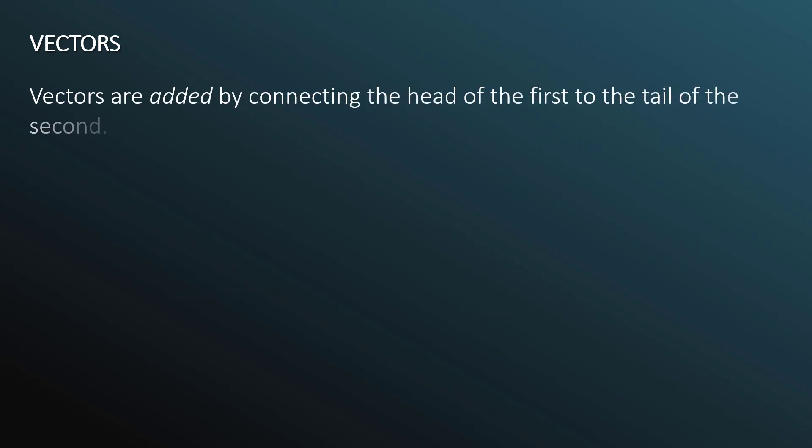Vectors are added by connecting the head of the first to the tail of the second. We're talking about pictorially adding them, which is often very useful. Let's begin with v1 and let's add this v1 vector to a vector v2. We take the head of the first, and we connect it to the tail of the second. And that will yield, if we add those two together pictorially, this will produce the resultant vector, the total vector, the net vector. This pink arrow, which I've denoted as v3, is simply the sum of v1 plus v2.